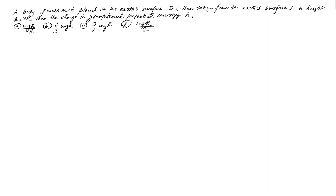The question asks for the change in gravitational potential energy. This is a simple question — just find the potential energy on the surface and the potential energy at h equal to 3R, then subtract to find the change in gravitational potential energy. But the problem with this kind of method is it will take a little bit more time to solve.